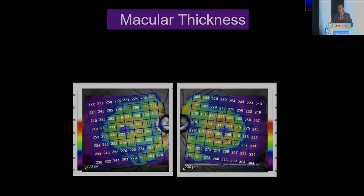Fast forward to spectral domain OCT — this is the map you see typically in spectral domain OCT for total macular thickness. This is not GCL, IPL, or all those other alphabet soup. This is total macular thickness. It is very easy for the software algorithm to identify the ILM, or inner limiting membrane, and the RPE because they are the two most reflective layers of the retina.